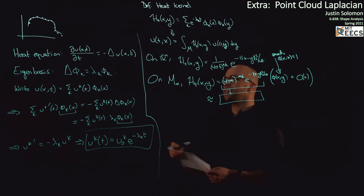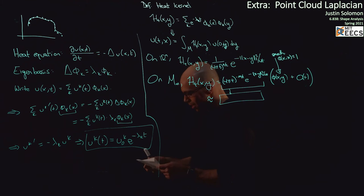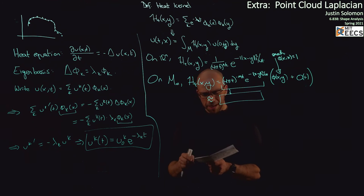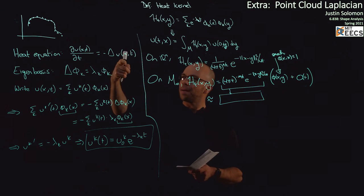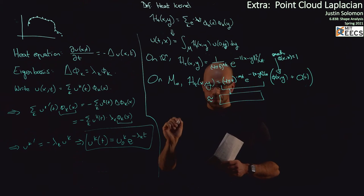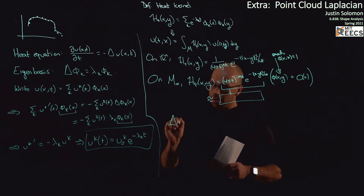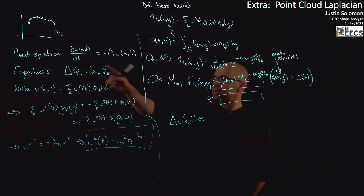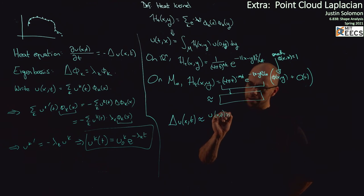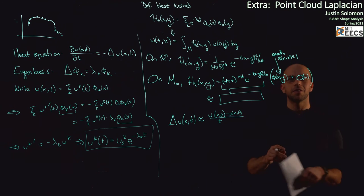Remember the heat equation: du/dt equals minus Laplacian times u. Belkin and Yogi do something really sneaky — they say we can actually get an approximation of the Laplacian by starting with the solution of the heat equation and working backward. For small t, the Laplacian of u(x, t) is roughly equal to minus du/dt, which for t close to zero looks a lot like u(x, 0) minus u(x, t) all divided by t — because this is a divided-difference approximation of the first derivative, and it works for small t.